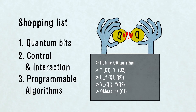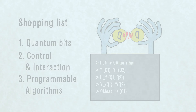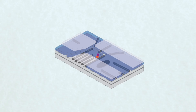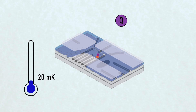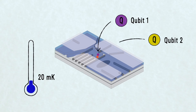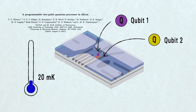We at QTEC have built a quantum chip in silicon that works at the temperature of 20 millikelvin, has controllable qubits and is, for the first time, fully programmable.